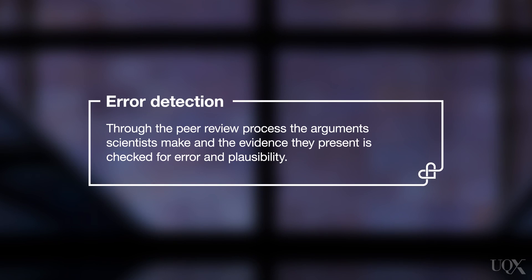Error detection. Scientists communicate through argumentation. They use evidence, which can make up premises or conclusions, and they draw conclusions from evidence they produce or from the evidence of others. Scientific papers generally report what was found, how it was found, and may go on to infer conclusions that may follow from those findings. These papers are peer-reviewed to ensure the arguments produced are good ones.